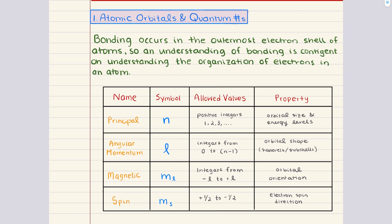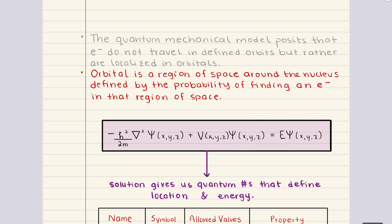Here, I want to provide you with a little bit of context on where these quantum numbers come from. While you won't be tested on all of the background details, understanding this foundation will make it much easier to see why quantum numbers are so important. Since this is some extra context, I want to switch over to these pages here to help us out.